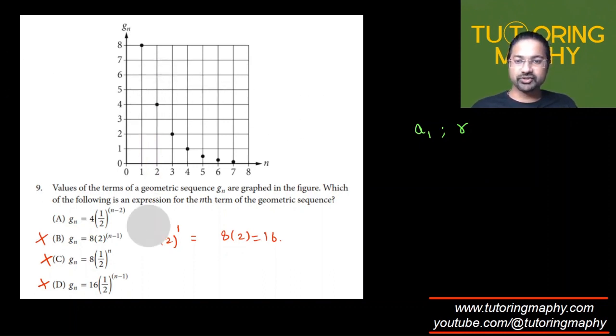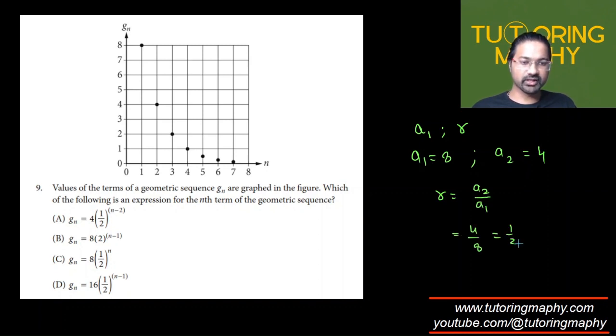That's one way. Another way, if you want to do the traditional way, of course, you know the value of a1 already, it's given as 8. You know the value of a2 is given as 4, so the common ratio will be a2 over a1, which will be 4 over 8, which is just 1 half.